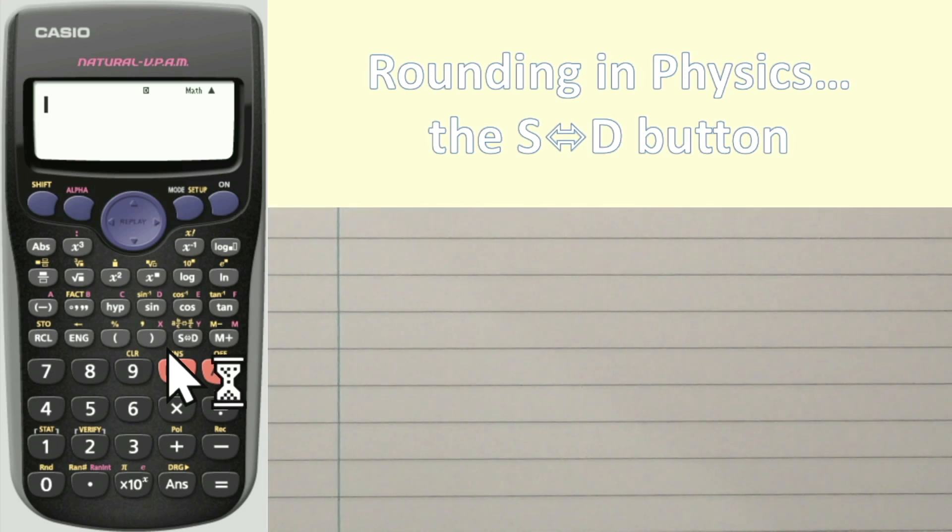Now, one button which might actually be useful for you on your calculator is this SD button here. So that could come in useful when you want to actually round your final value. That hopefully should make more sense once we go through the two examples. But before we do, I'm going to show you this.